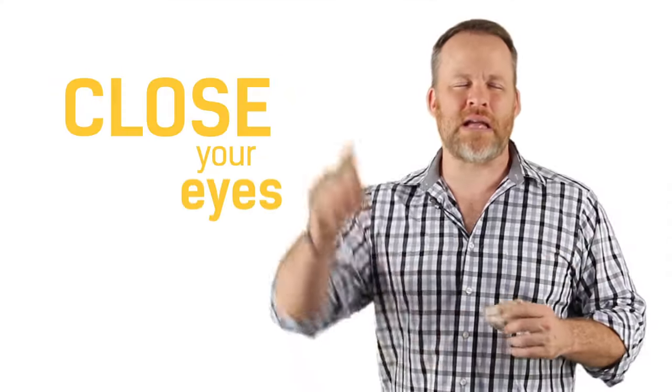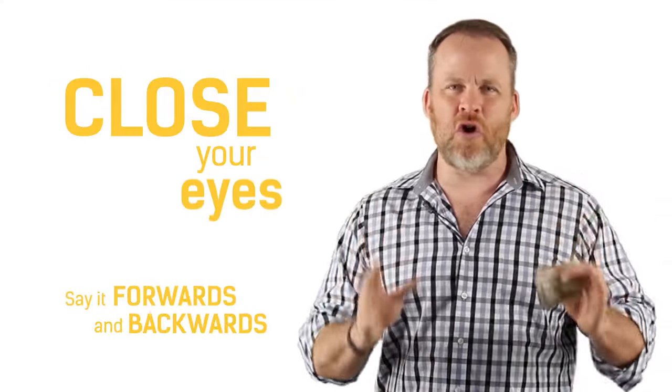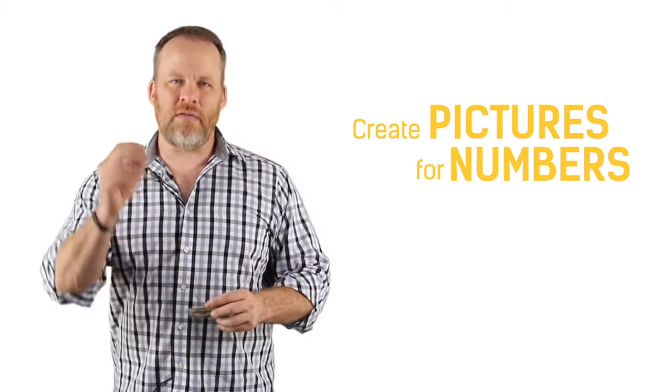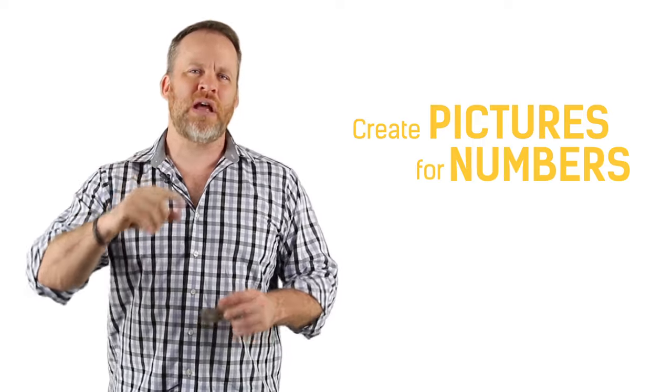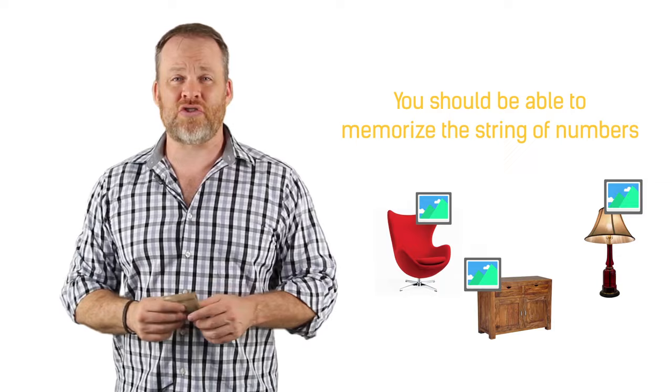The way that you get good at this is number five pieces of furniture in each room of your house—one, two, three, four, five, six, seven, eight, nine, ten. Close your eyes, say them forwards and backwards, make sure that you know them solid. And then create pictures for numbers. Whenever you see those numbers or whenever you hear those numbers, imagine those pictures interacting with your furniture and you should be able to memorize the string of numbers.